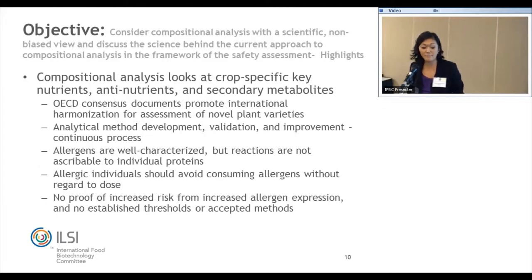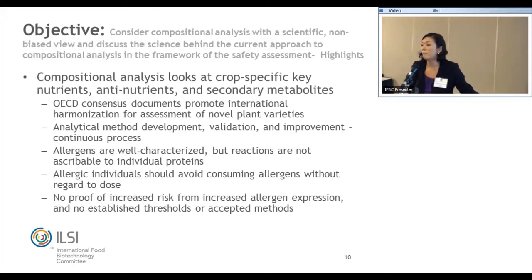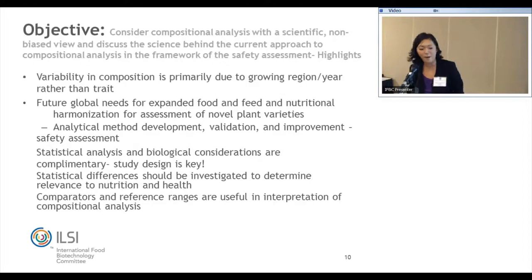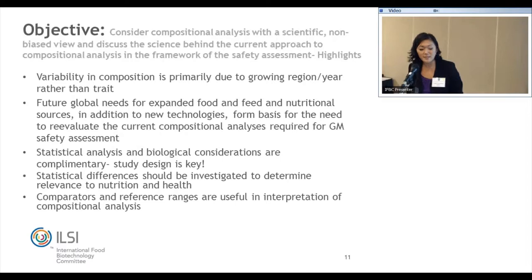The analysis looks at crop-specific key nutrients, anti-nutrients, and secondary metabolites. We've heard about the development of the OECD consensus documents and how this is really an international process about harmonization — what does everybody think is important to look at? We've heard about analytical method development, validation, and improvement, as well as the request for allergen data. Rick Goodman noted there's no proof of increased risk from increased allergen expression and no established thresholds or accepted methods. Statistical analysis and biological considerations are complementary, and study design is key. Statistical differences should be investigated to determine relevance to nutrition and health, and comparators and reference ranges are useful for interpretation of compositional analysis.